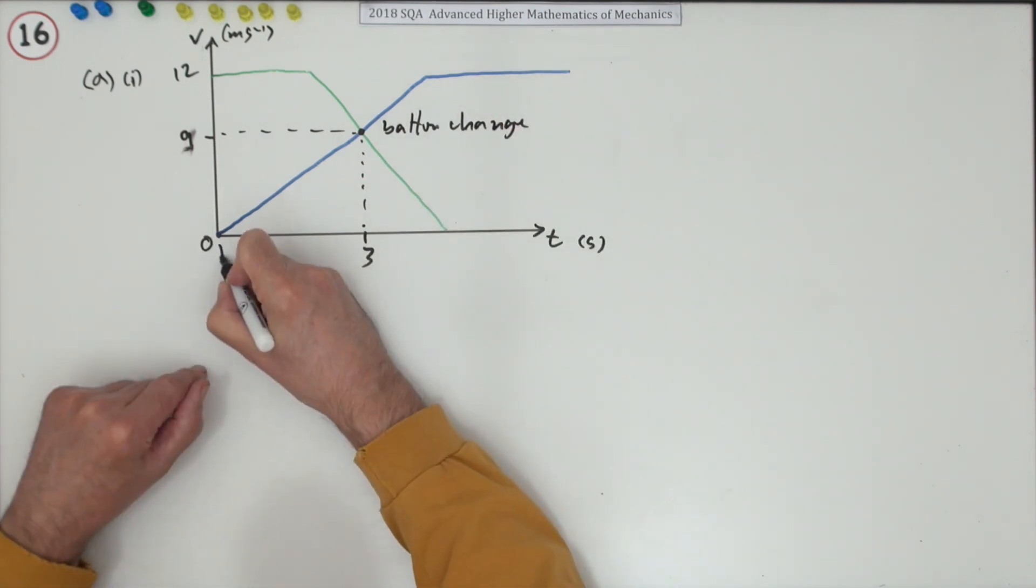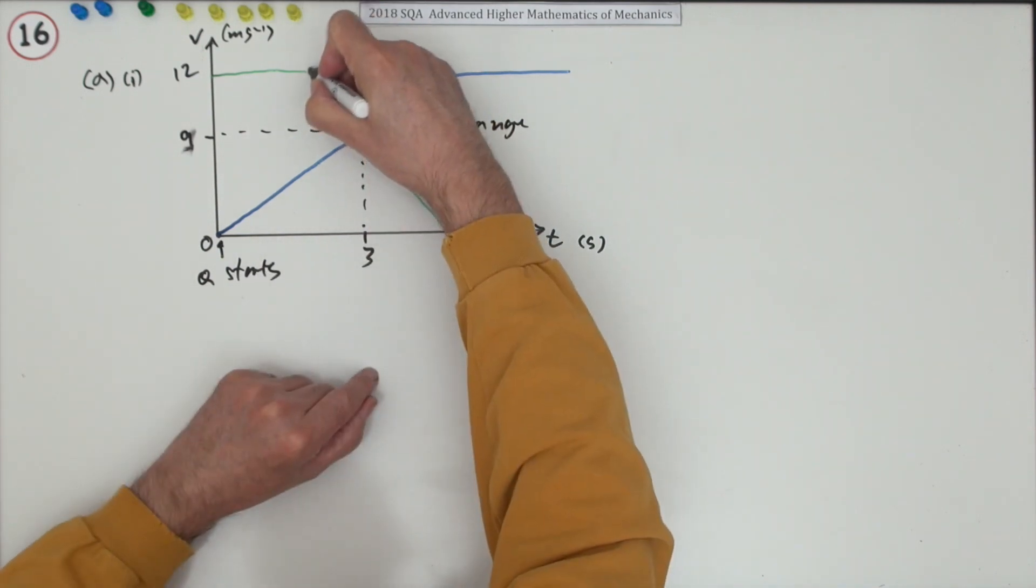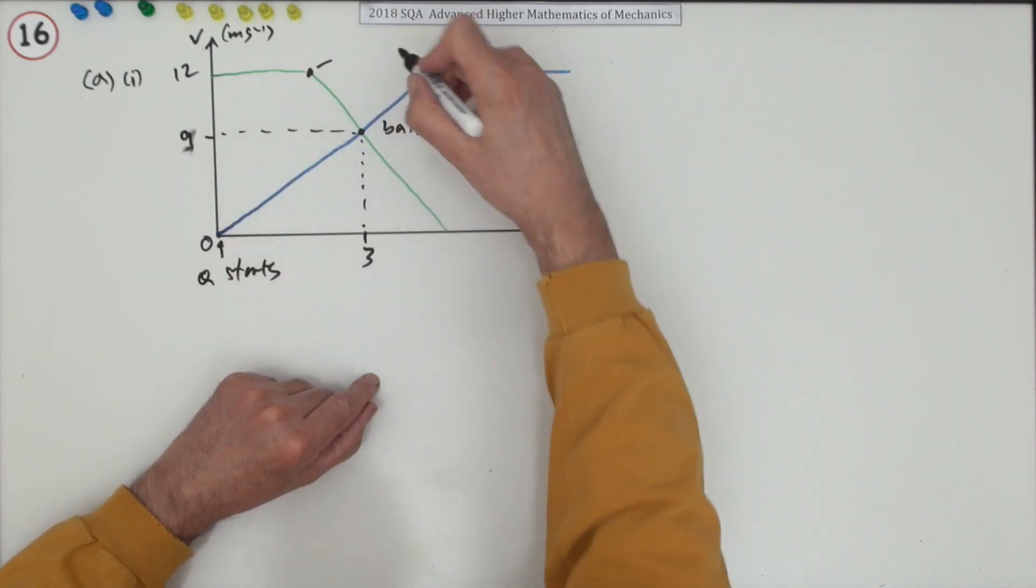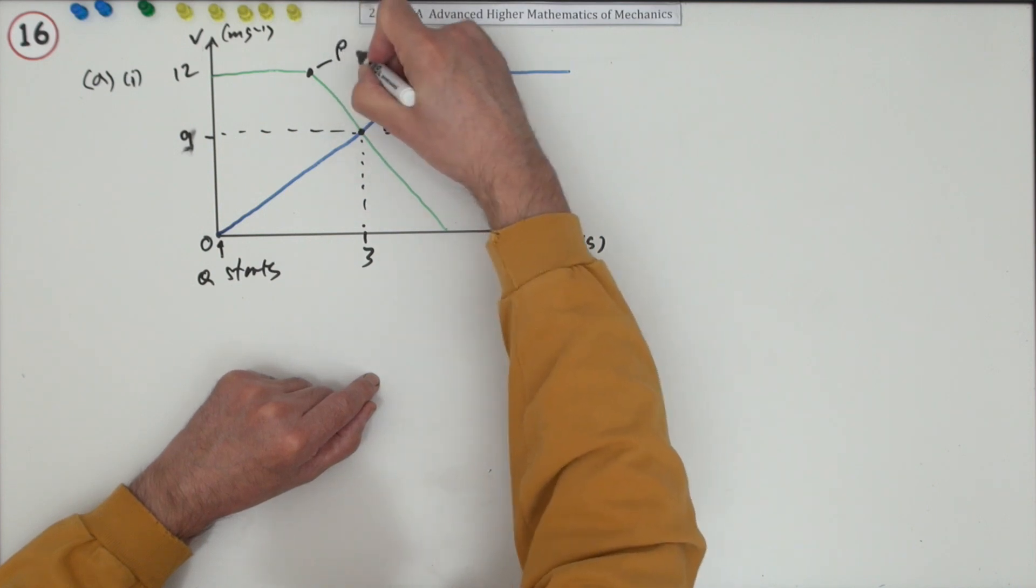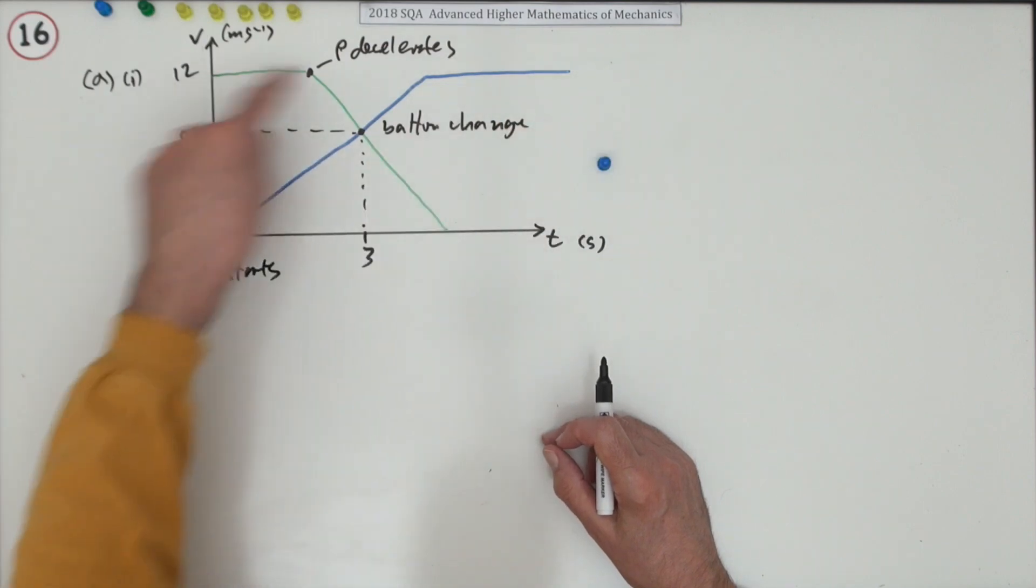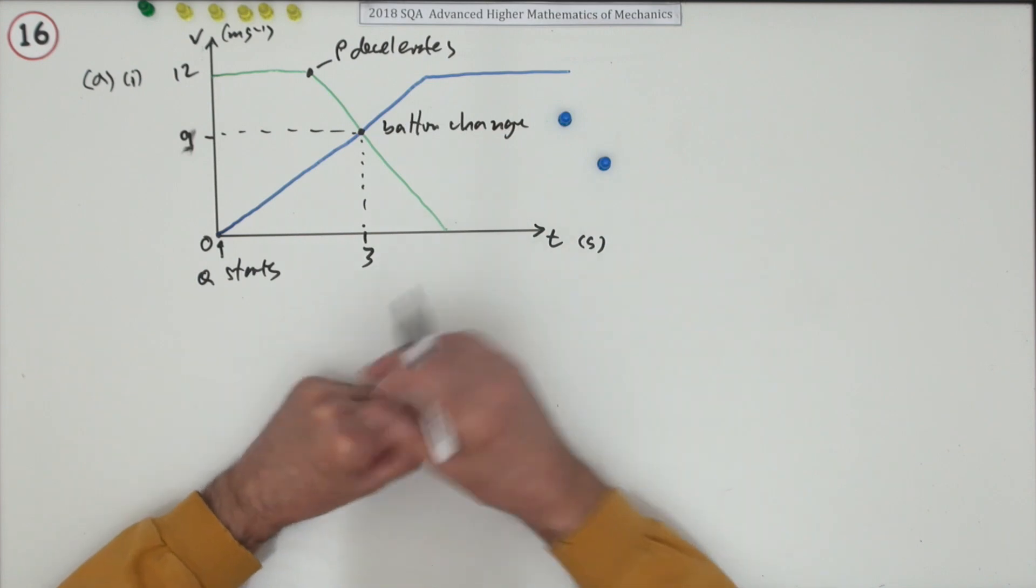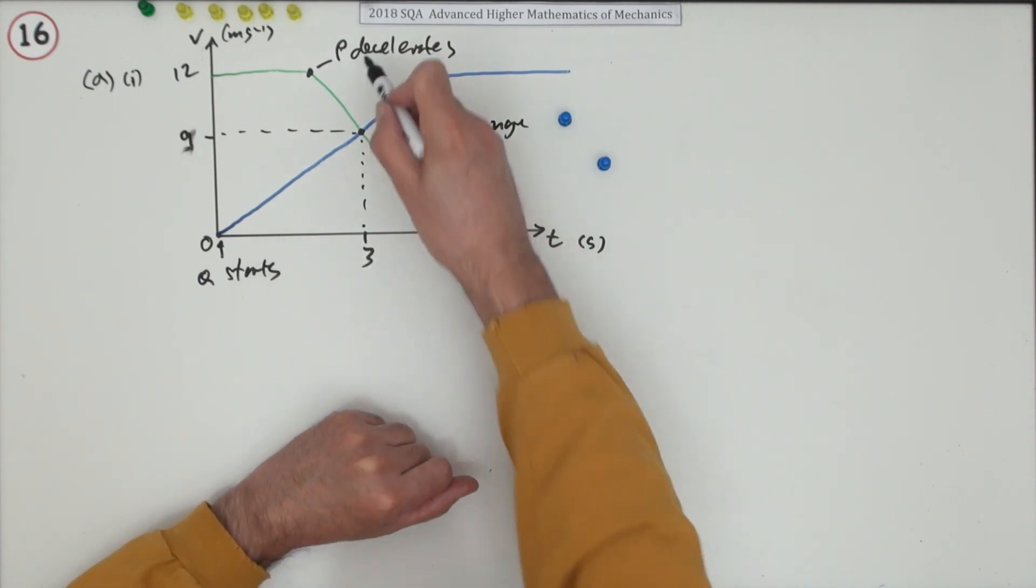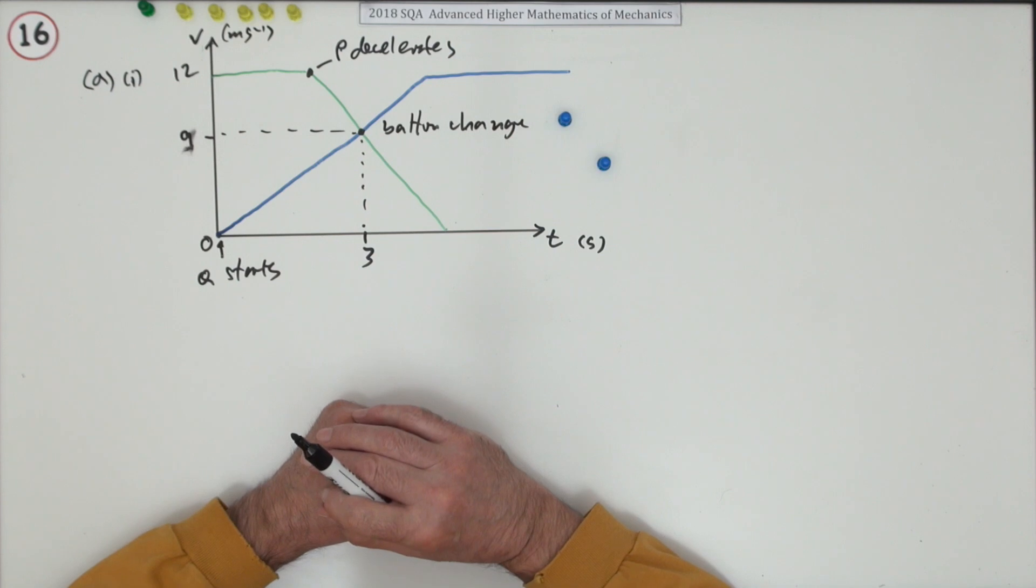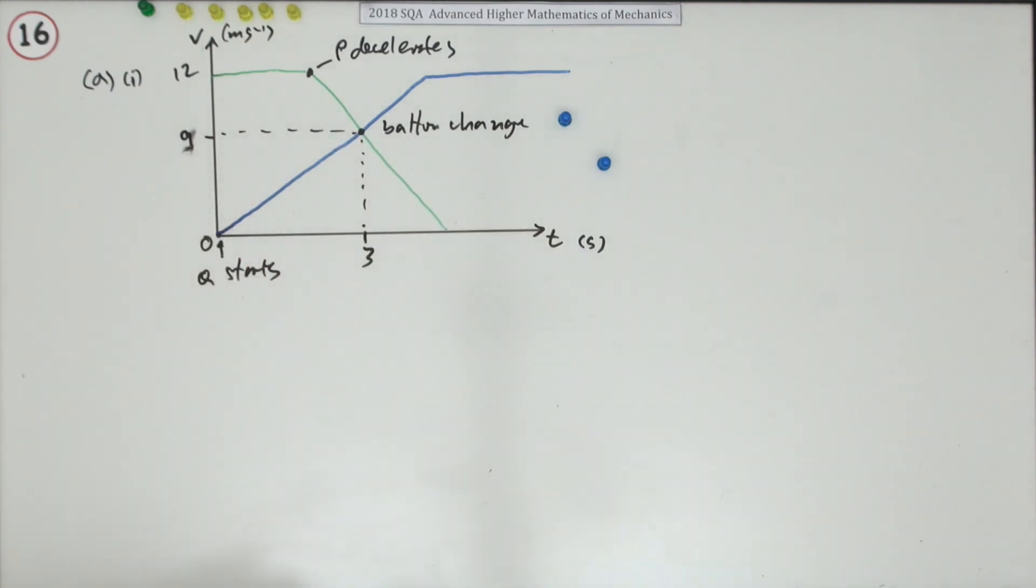Now it says annotate. I suppose just really put the units in here. So that time's in seconds and that V's in metres per second. Just indicate exactly that baton change is there. That point refers to the baton change. That point there is where Q starts. And this point here is where P decelerates. There was two marks for this.